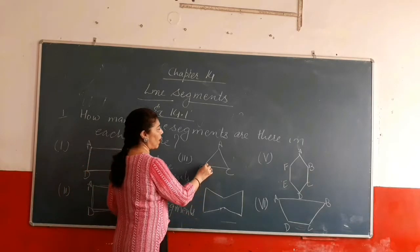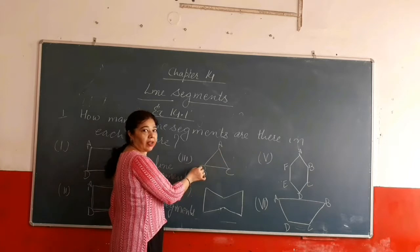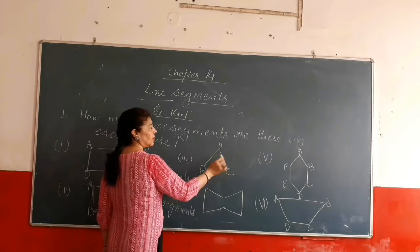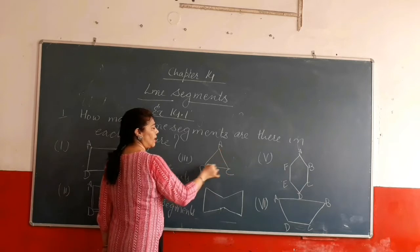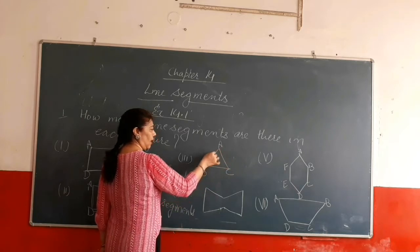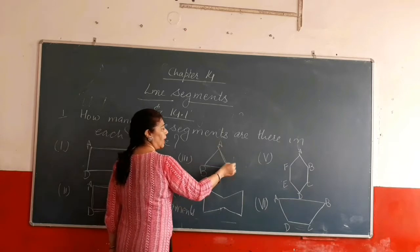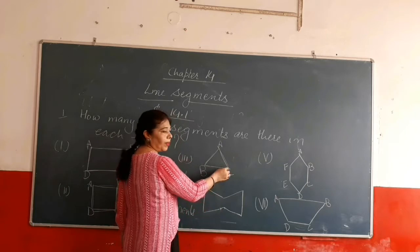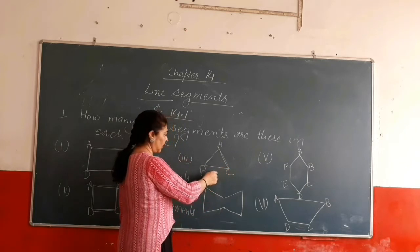And in the third part, the figure given is a triangle. There are how many line segments? Three, because in a triangle there are three line segments: first is AB, then BC, and CA. So in this figure there will be three line segments.